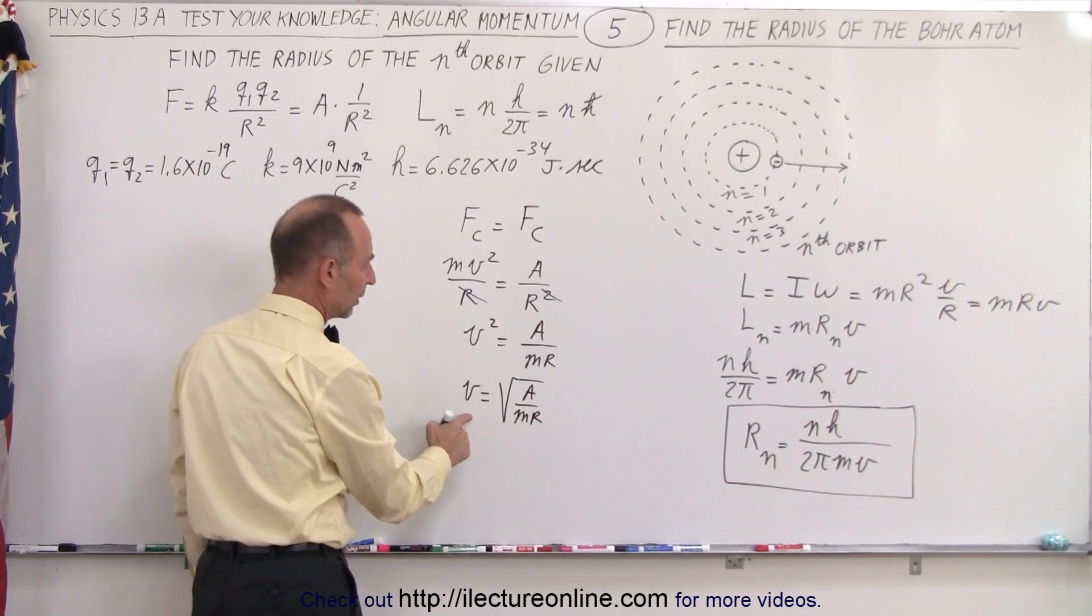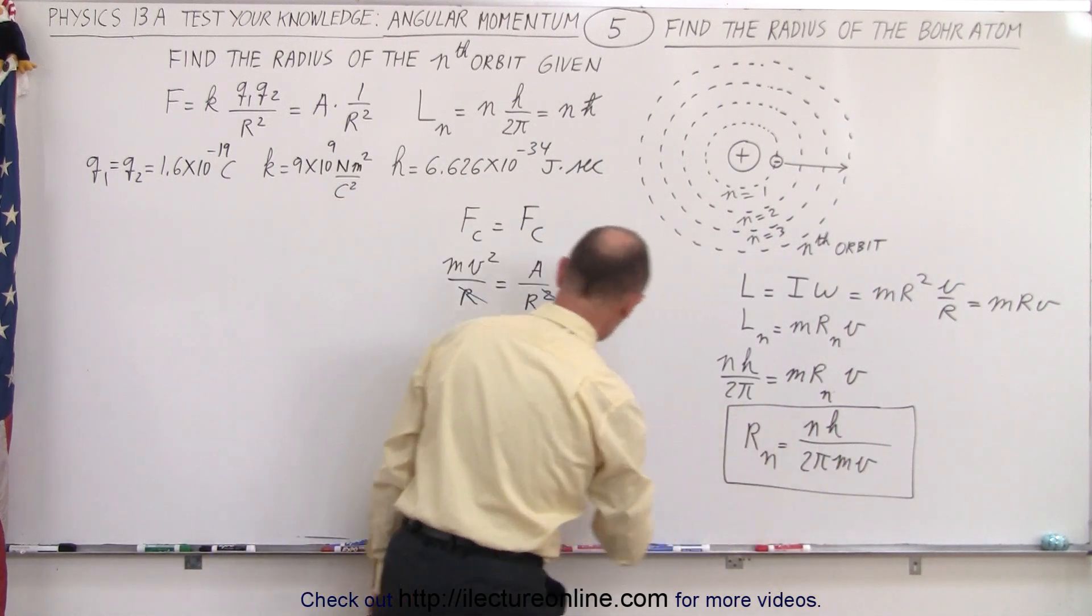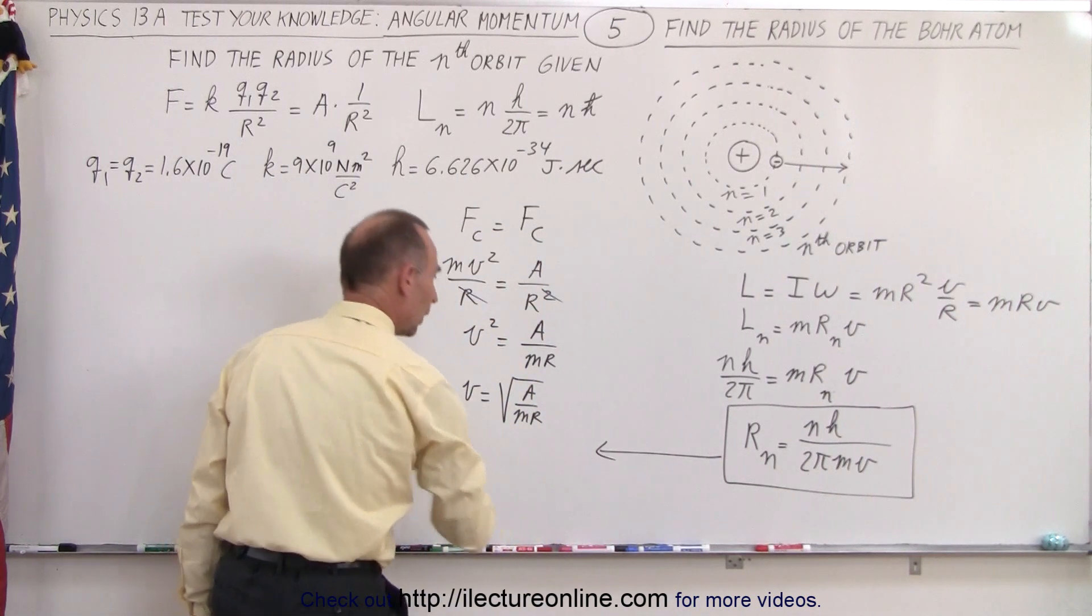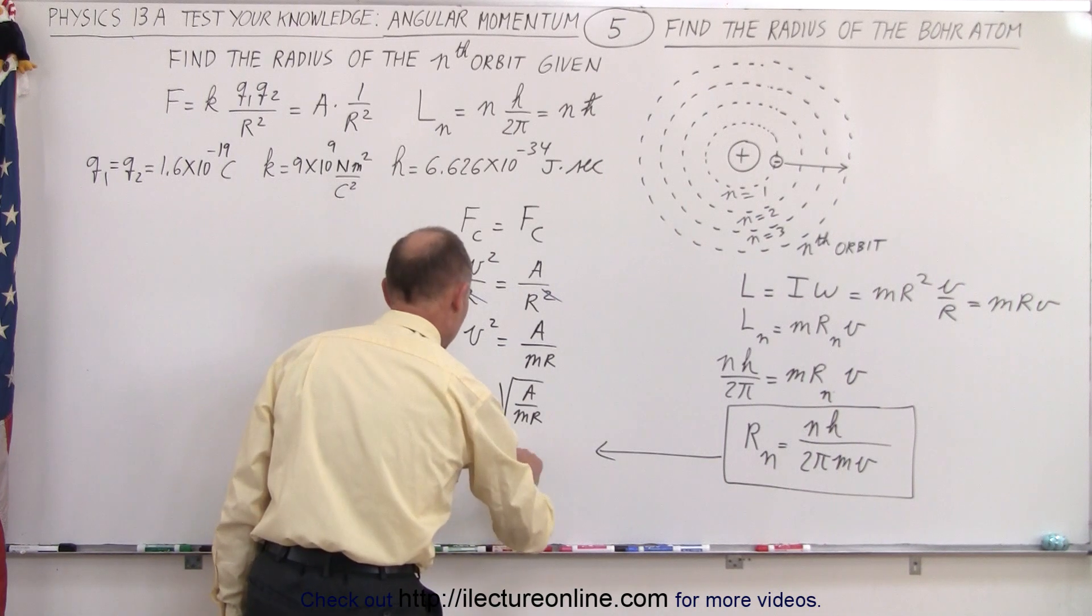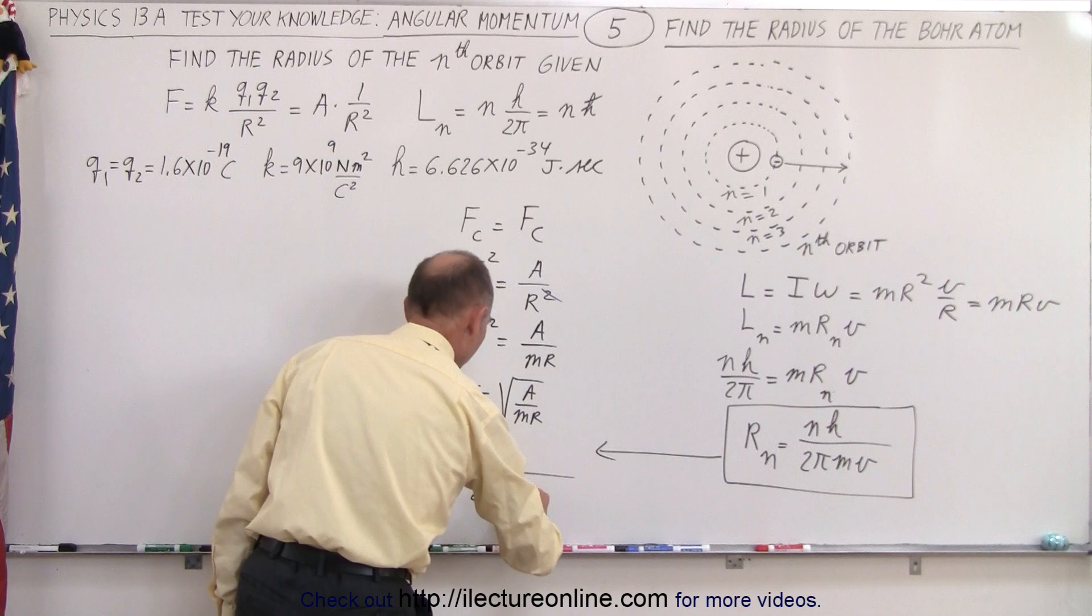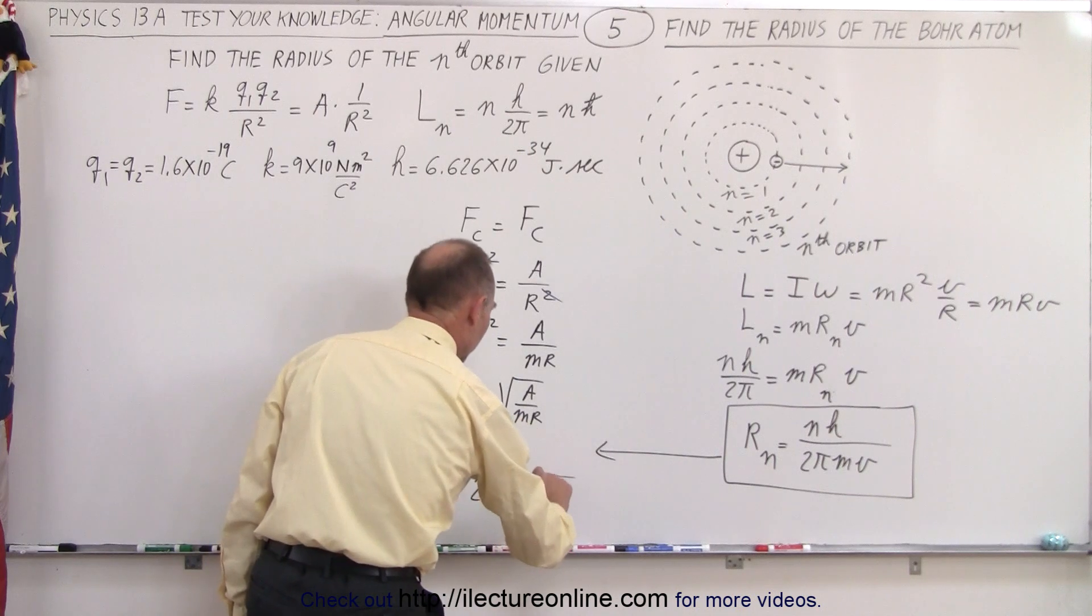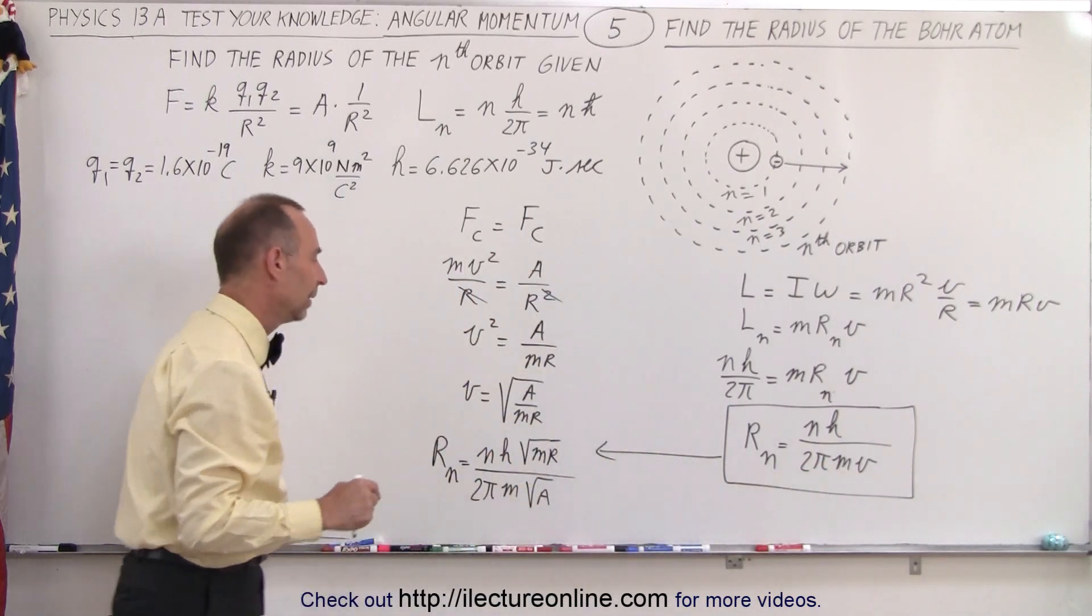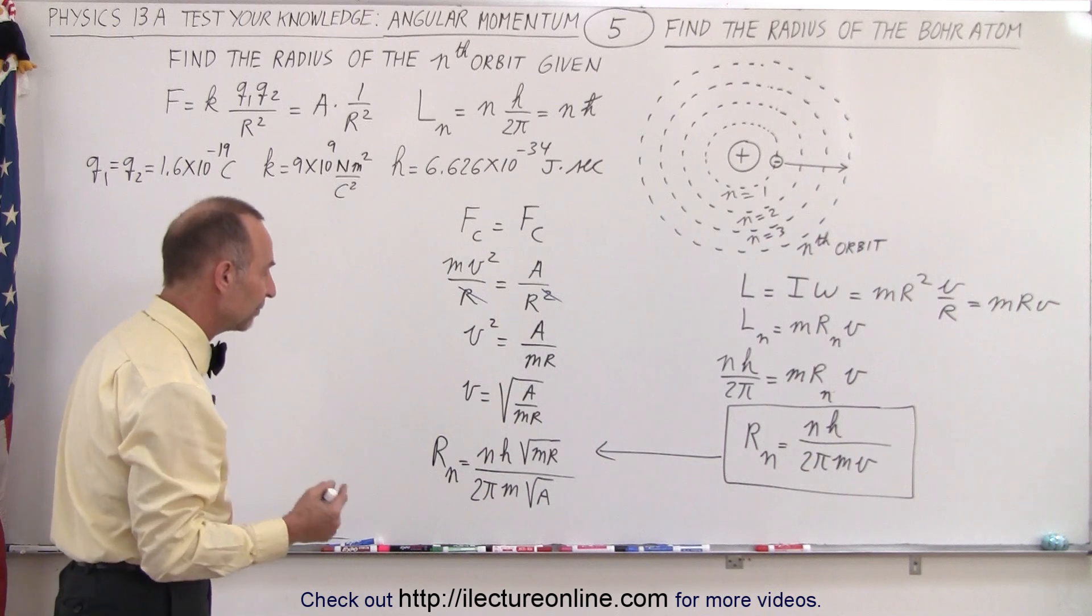If we then replace this v by this quantity, we could then say that r sub n would be equal to nh divided by 2πm, and v would be the square root of a times the square root of mr in the numerator. Since v is in the denominator, I could then write it as the product of the inverse.